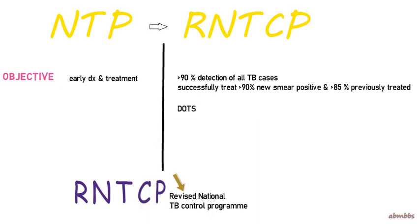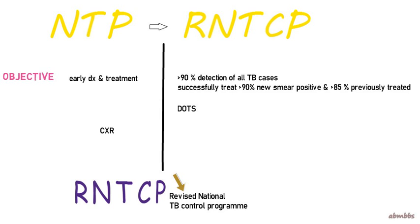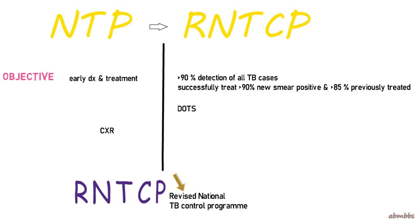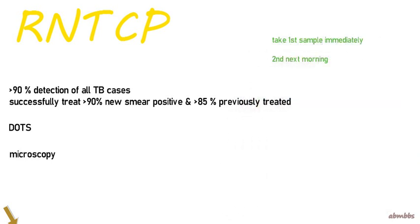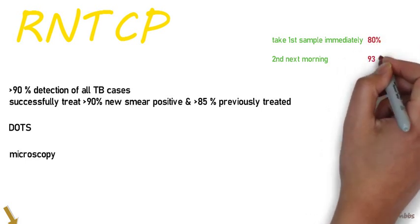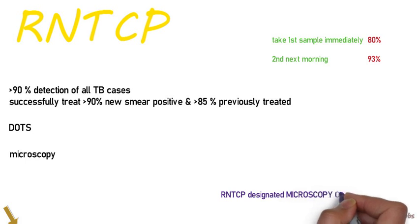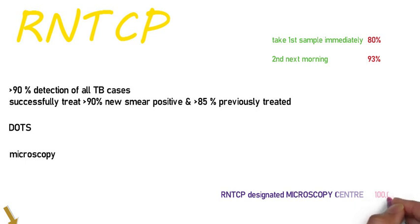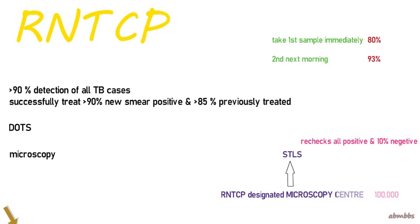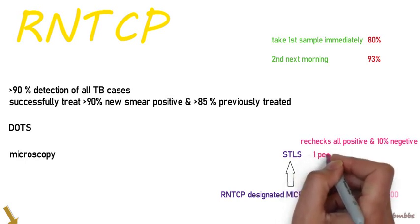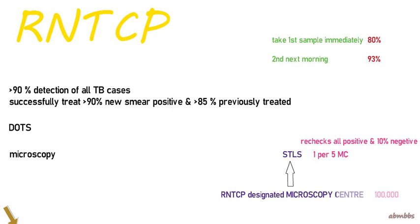RNTCP was based on the DOT strategy. Also, the National TB Program was more based on chest X-rays, while RNTCP was based on microscopy. Under RNTCP strategy, when a patient with suspected TB came to hospital, their sputum is sent for AFB immediately and another sample is sent the next morning. This is done because the sensitivity of the spot sample is around 80% while that of a morning sample is higher at 93%. Samples are sent to RNTCP designated microscopy centers where they are tested — one center per 1 lakh population. These centers are looked after by the senior TB lab supervisor, who rechecks all smear positive cases and 10% of smear negative cases. There is one senior lab supervisor per 5 microscopy centers, that is, per 5 lakh population.